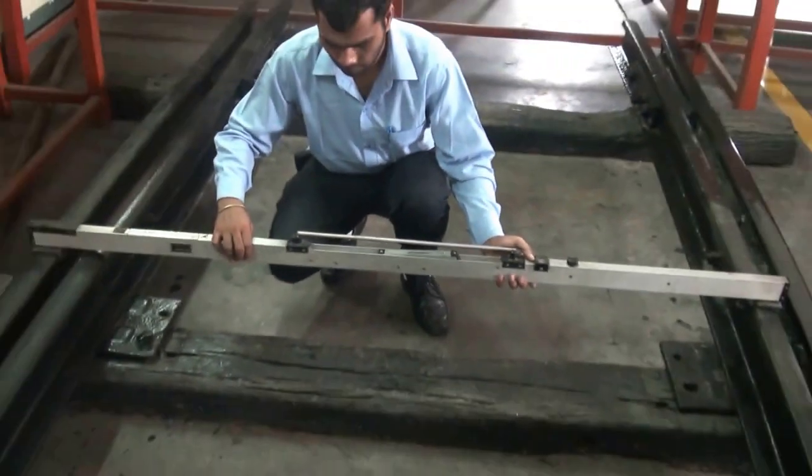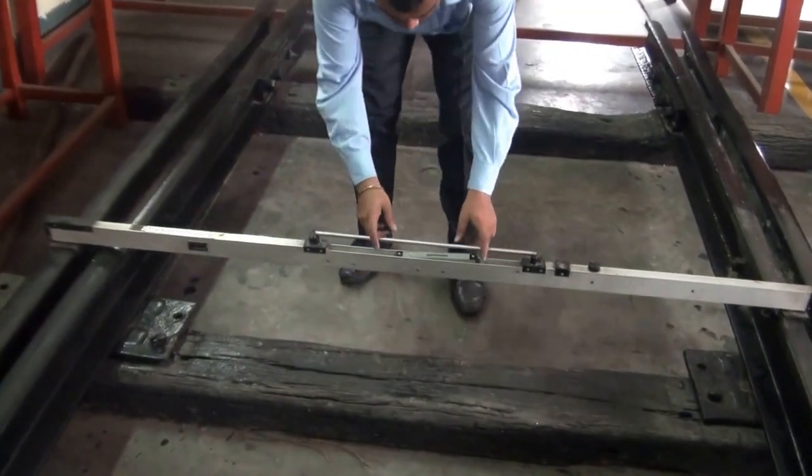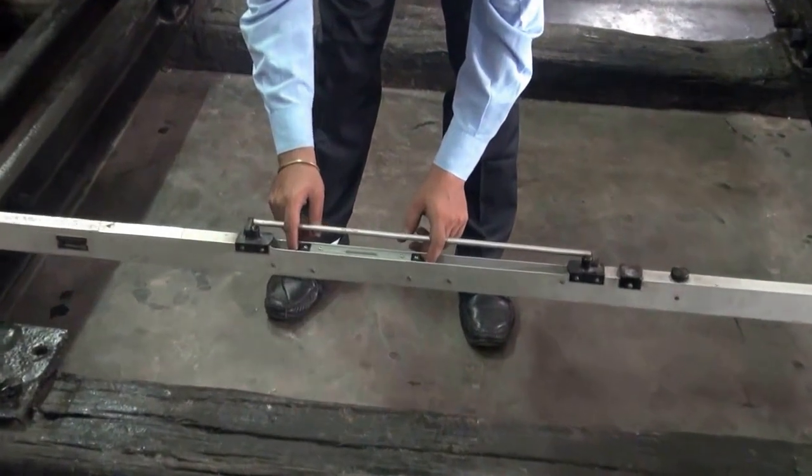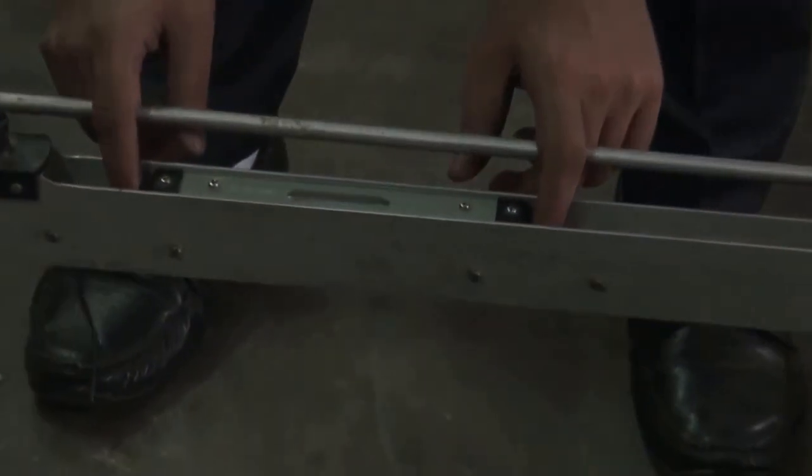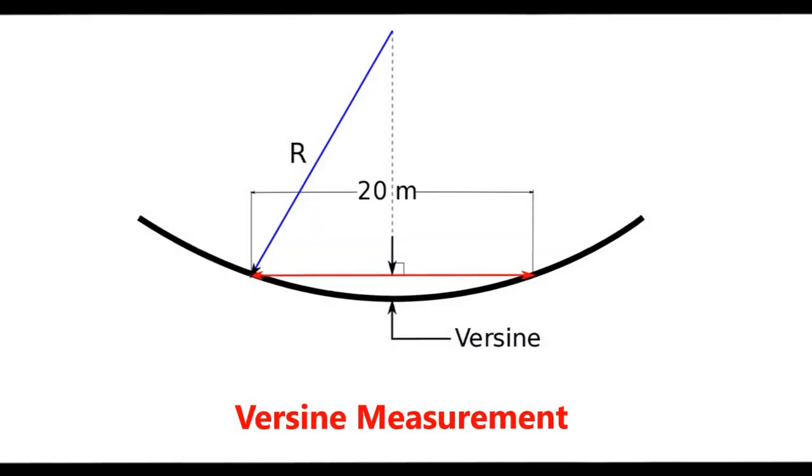To measure the cross level of track, slide the spirit level in the slot till the bubble stabilizes in the center, then note down the graduation mark coinciding with the end of the spirit level. Another important track parameter is versine.